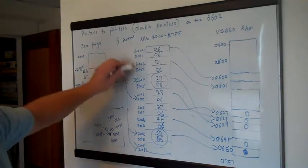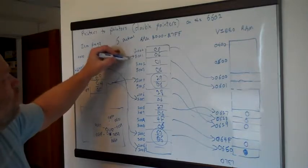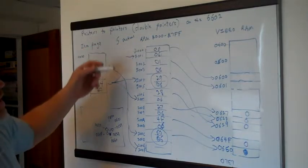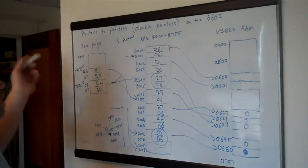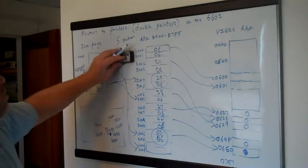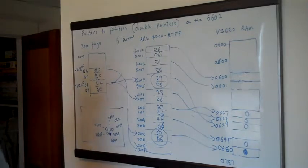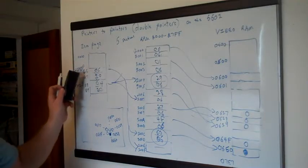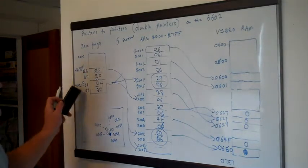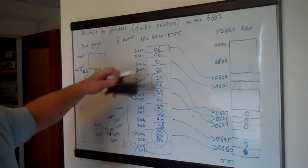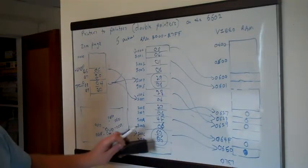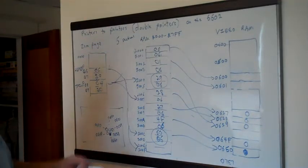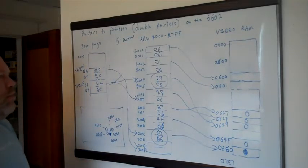So that is how you do pointers to pointers. That's what we're going to be working on going forward in the next video. We already have head P doing this, so we've got to add the ability for tail P to do it and handle worm length. We also need to deal with what happens when you get to the end of the pointer list. So that's what's coming up — I hope this was helpful, and thank you for watching.